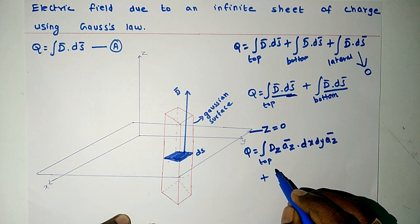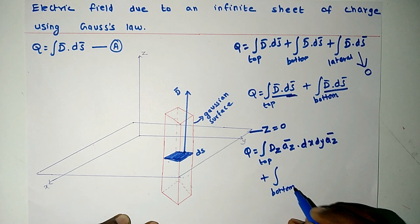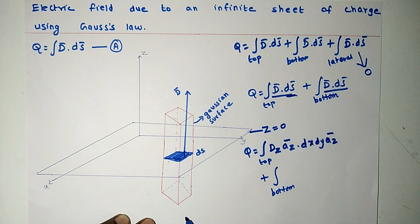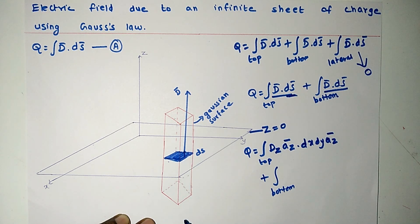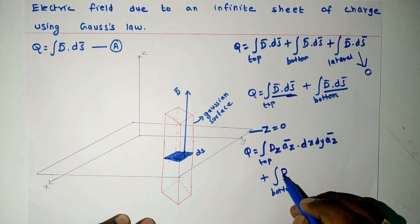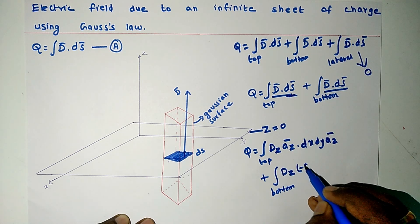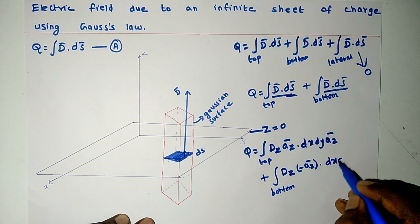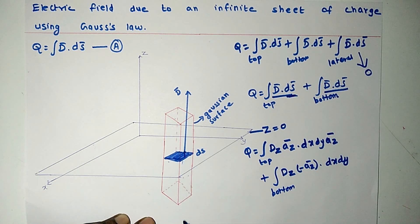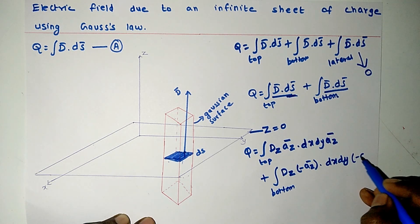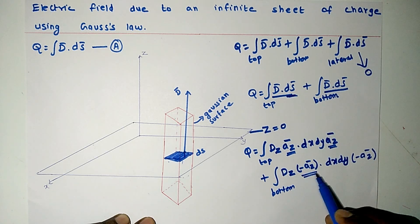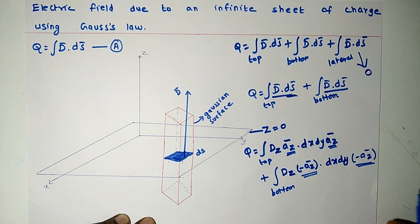Now for the bottom surface: when we move from the charge distribution downwards, the value of z will keep on decreasing, so the unit vector along this axis will be minus az. So we can write D vector as Dz times minus az. Similarly, the value of ds will be dx dy, and the unit normal vector along this direction will be minus az. So az dot az equals 1, and similarly minus az dot minus az also equals 1.